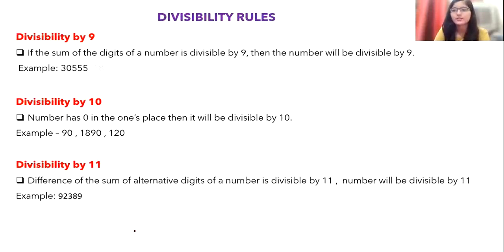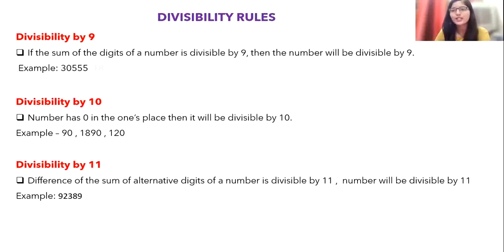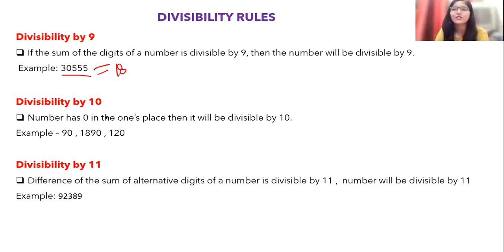For divisibility by 9: the rule is similar to that of 3. Sum all the digits of the number; if that sum is divisible by 9, then the number is divisible by 9. For example, 3055: 5 + 5 + 5 + 3 = 18, and 18 is divisible by 9, so 3055 is divisible by 9. For divisibility by 10: if the last digit is 0, the number is divisible by 10.